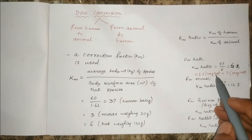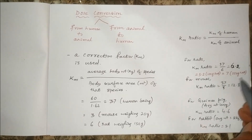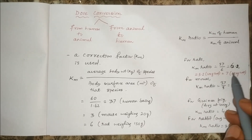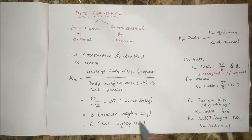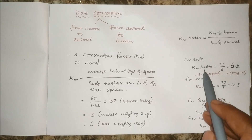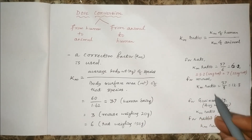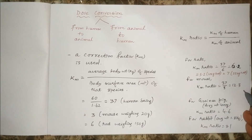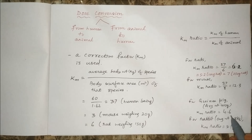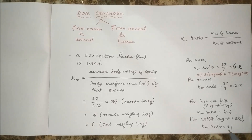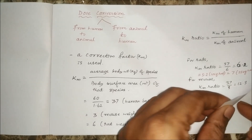The KM ratio is equal to the KM of human divided by the KM of the animal. So for a 150-gram rat, KM ratio is 37 divided by 6, which is 6.2. For a 100-gram rat, KM ratio is 5.2, and for a 250-gram rat it will be higher — KM ratio will be 7. So with a change in average body weight of the animal, the KM ratio also changes. This KM ratio, which is the ratio of KM of human to KM of animal, is required during dose conversion.